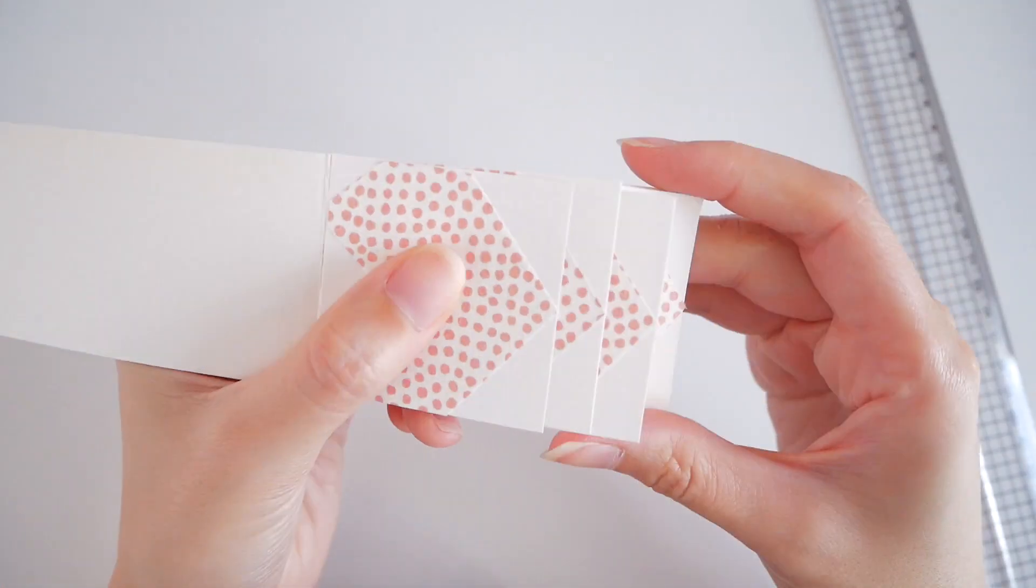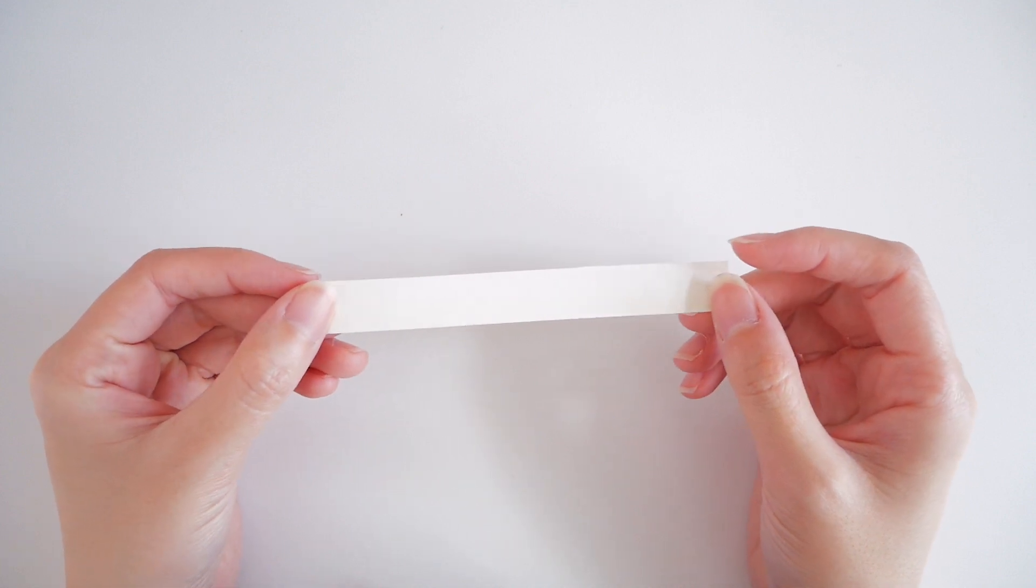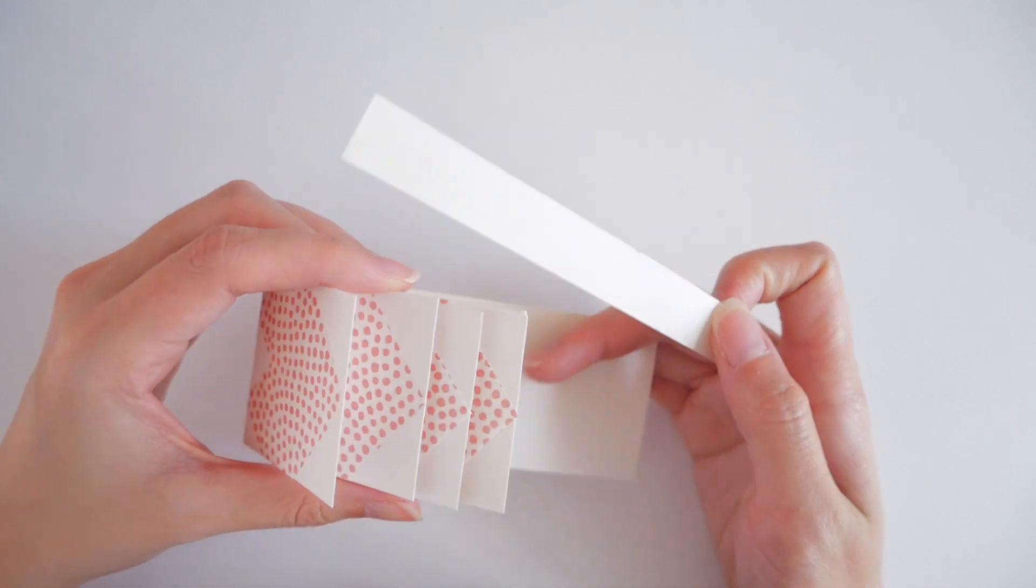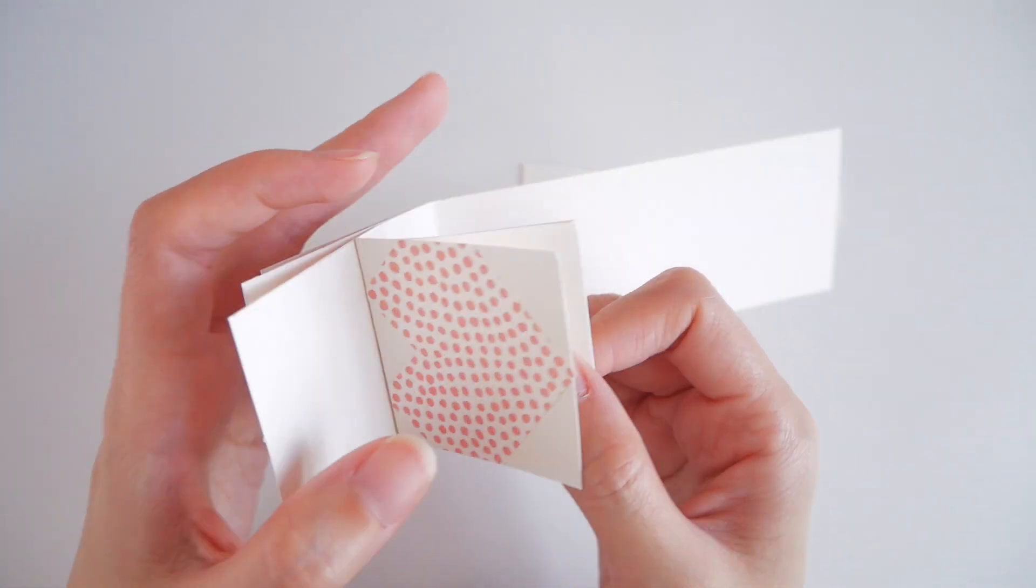Fold the longer flap down towards the back. Prepare a small strip of paper that's about 1.5 by 12 cm. Slot it behind the bottom most card and then fold it towards the back.